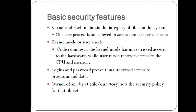Basic security features of Linux: the kernel and shell maintain the integrity of files on the system. The kernel is the core of the operating system, and the shell acts as an interface between the kernel and the user. One user process is not allowed to access another user's process. The code is executed in two modes: kernel mode and user mode.